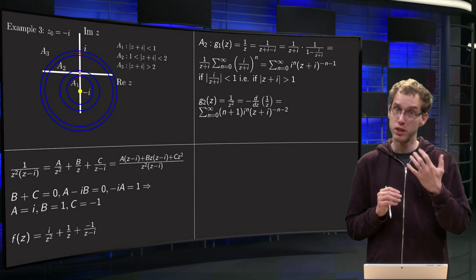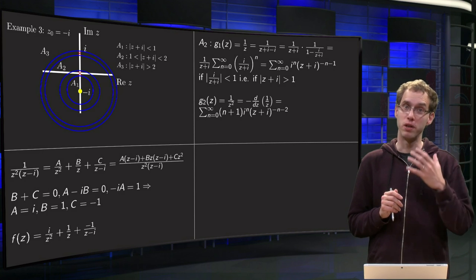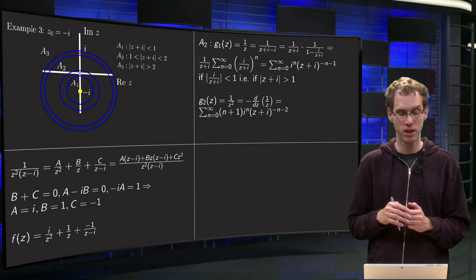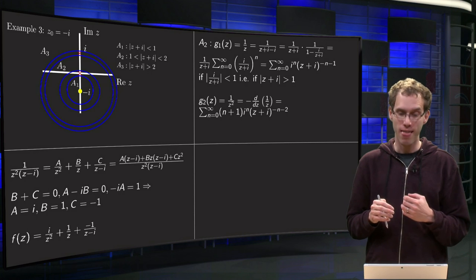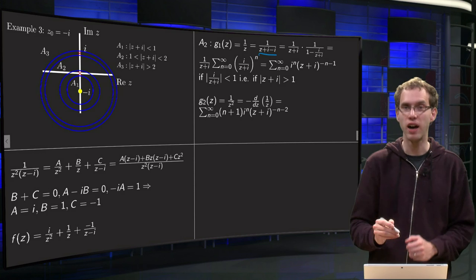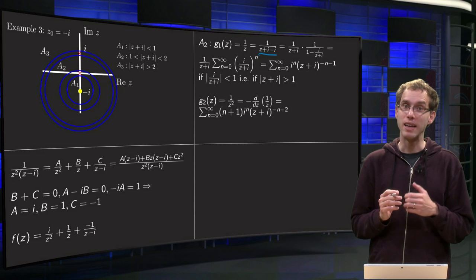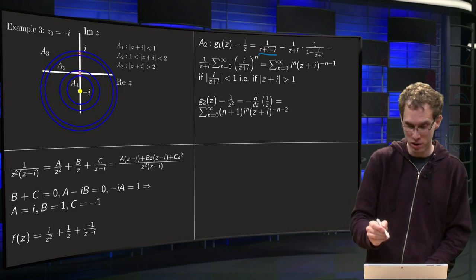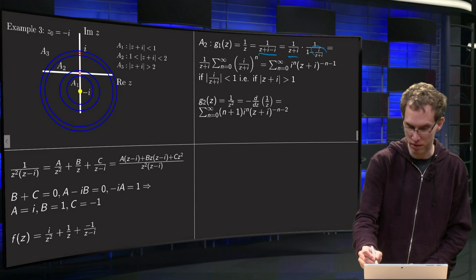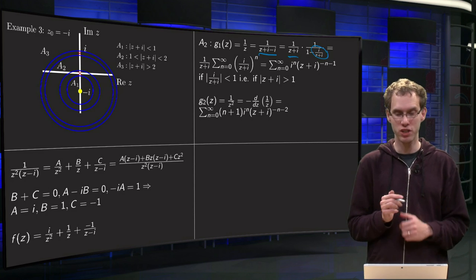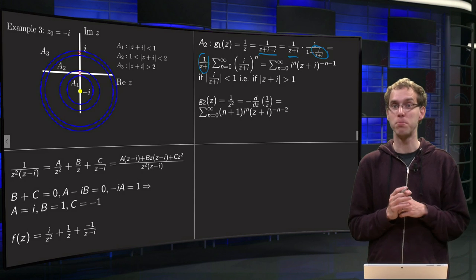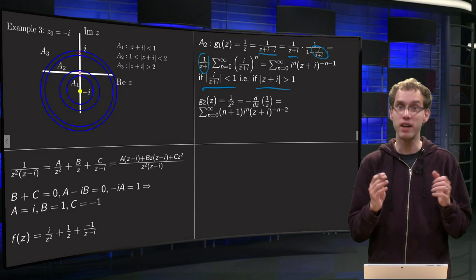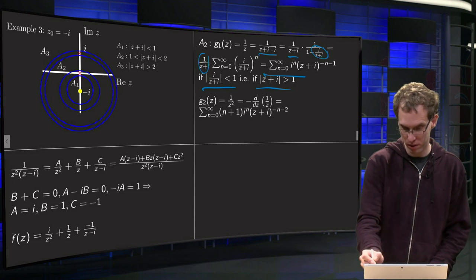Now each term can be handled separately as a geometric series. For the a/z² and b/z terms, we first expand g₁(z) = 1/z. We write 1/z = 1/((z+i) − i). Since |z + i| > 1 in annulus A2, we take out (z + i) to get 1/((z+i)(1 − i/(z+i))), then expand as a geometric series in i/(z+i). This converges if |i/(z+i)| < 1, i.e., |z + i| > 1, which holds in A2. Differentiating gives us g₁'(z) = −1/z².